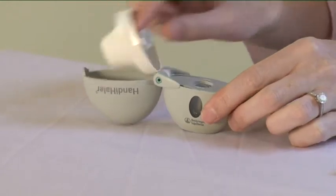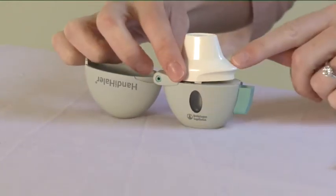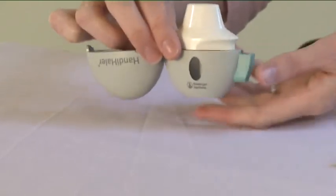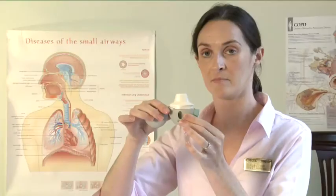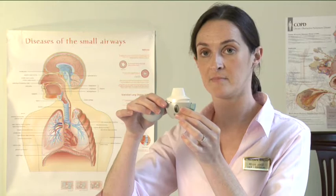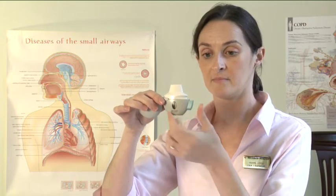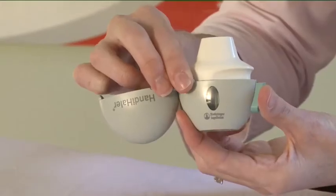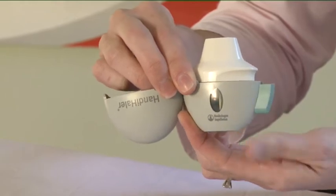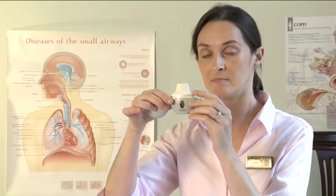Close the mouthpiece over until you hear a click. Leave the dust cap open. Hold the Handihaler device with the mouthpiece upwards and press the piercing button completely in only once and release. This makes holes in the capsule and allows the powder to be released when you breathe in.